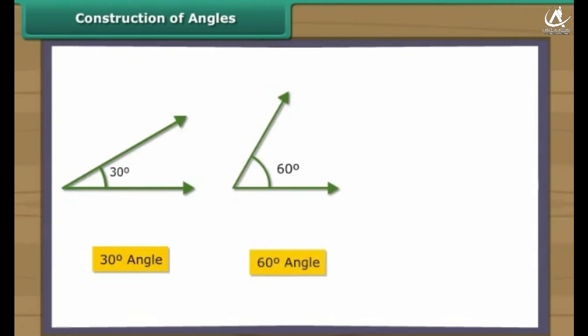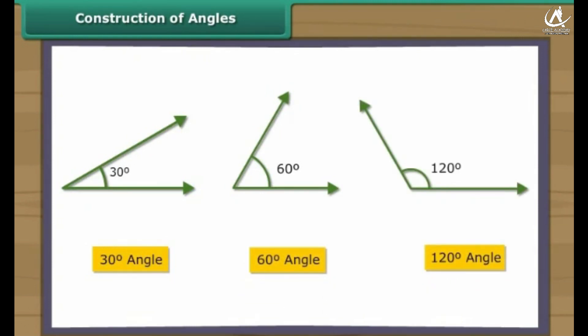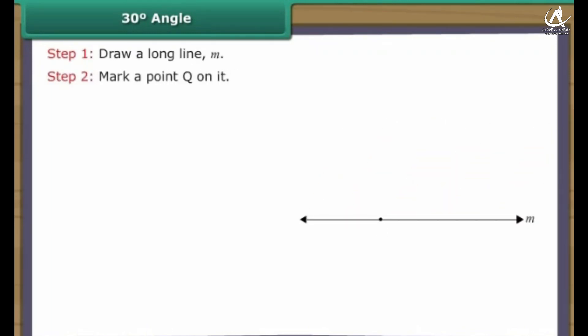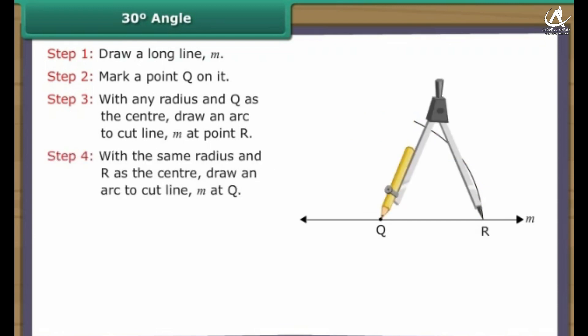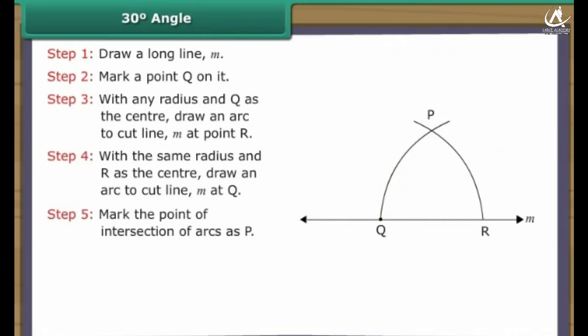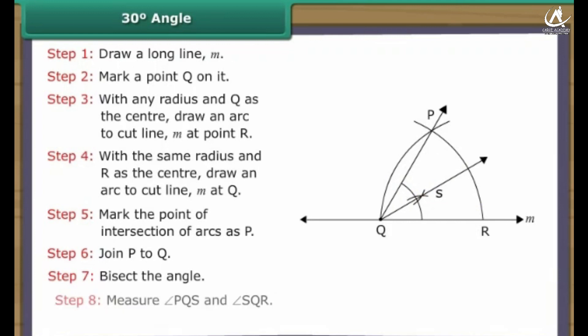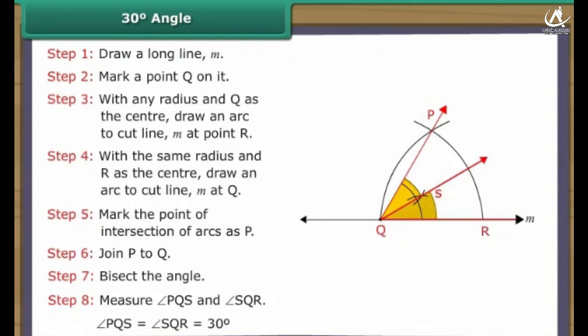Construction of angles. Let us now construct some special angles one by one: 30 degree, 60 degree, and 120 degree angles. Construction of 30 degree angle: Draw a long line M. Mark a point Q on it. With any radius and Q as the center, draw an arc to cut line M at point R. With the same radius and R as the center, draw an arc. Mark the point of intersection of arcs as P. Join P to Q. Bisect the angle. Measure angles PQS and SQR. Angle PQS equals angle SQR, which equals 30 degrees.